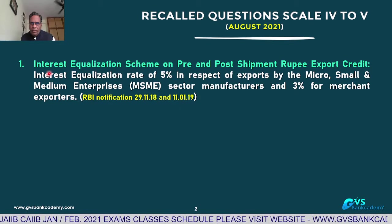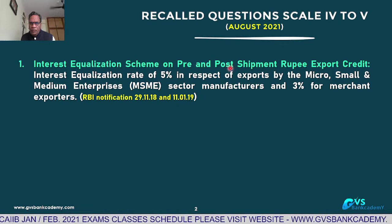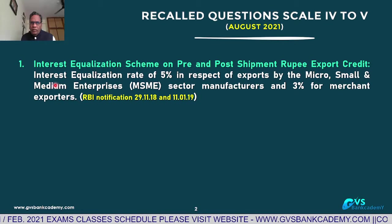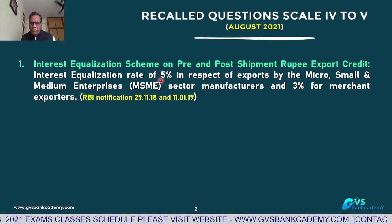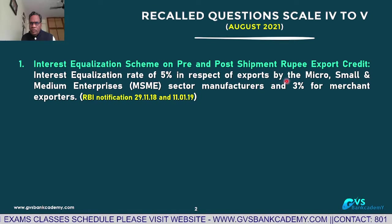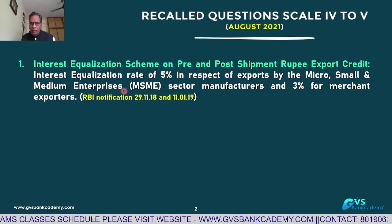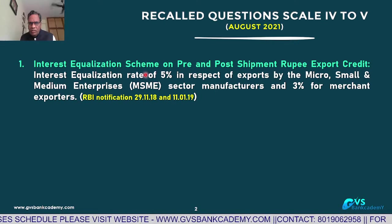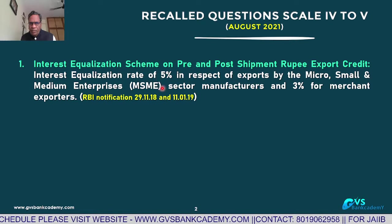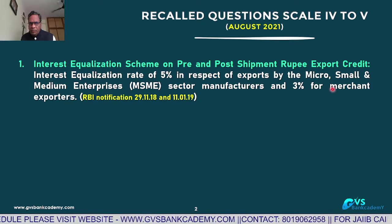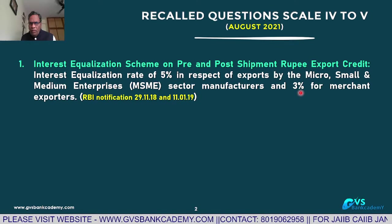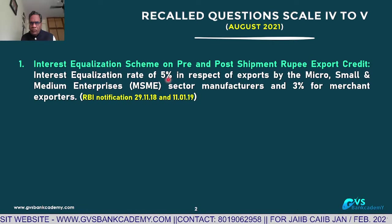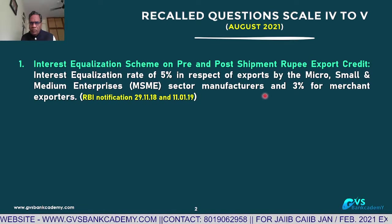Q1: Interest Equalization Scheme on Free Shipment and Forced Shipment Rupee Export Grade. The Interest Equalization Rate is 5% in respect of exports in the micro, small and medium enterprise sector — MSME manufacturing sector, 5%. MSME-related Merchant Trading Exporters get 3% interest subvention. That is called Interest Equalization: MSME Manufacturing Exporters 5%, Merchant Traders Exporters 3%.